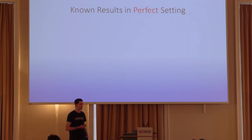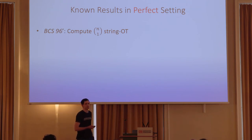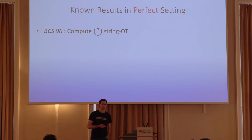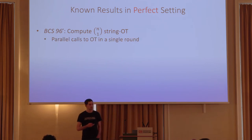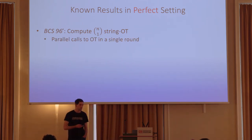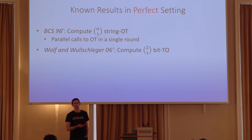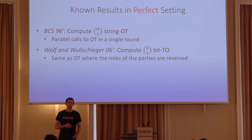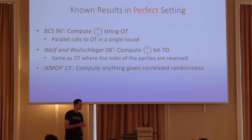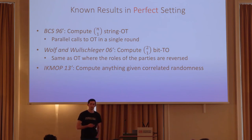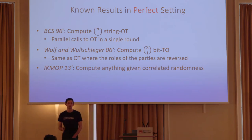What about the perfect setting? It turns out we don't know a lot. A protocol by Brassard, Crepeau, and Sansa showed that we can compute one-out-of-N string OT in this model, and this is a single-round protocol. Wolf and Walschlager showed that OT is symmetric — meaning we can compute what they call TO, where the roles of the parties are reversed. In a slightly different model, Ishai, Kusilevitz, Orlando, Paskin-Cherniarski, and Meltgaard showed that if the parties have correlated randomness, then anything can be computed with perfect security, though the correlation depends on the functionality to be computed.